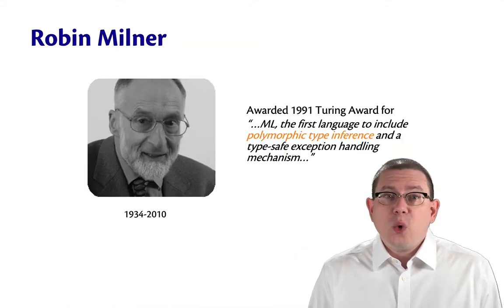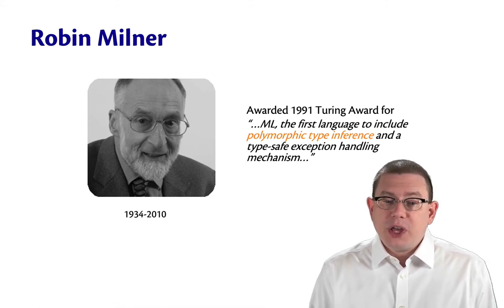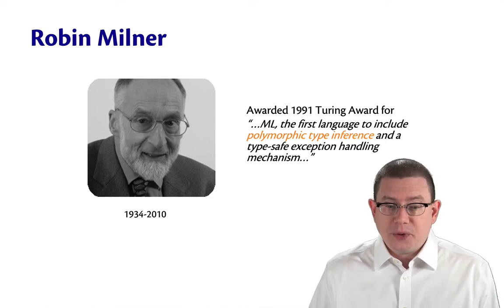Robin Milner won the Turing Award in part for his development of this type inference algorithm. He got the award in 1991 for ML, the first language to include polymorphic type inference.